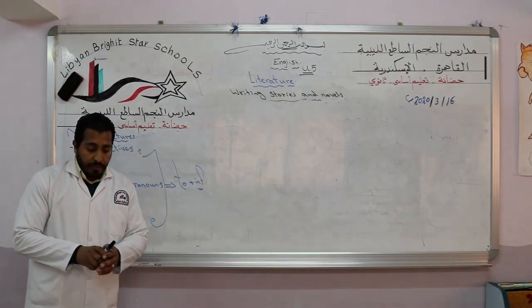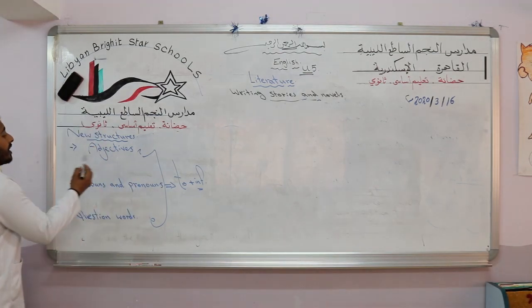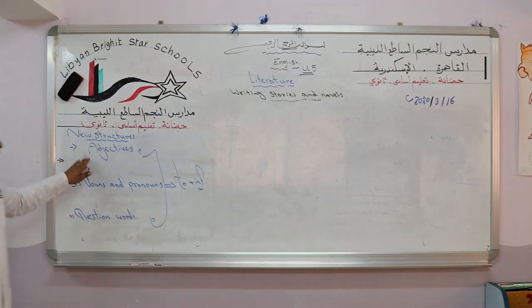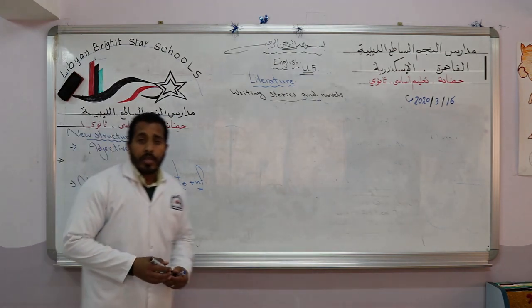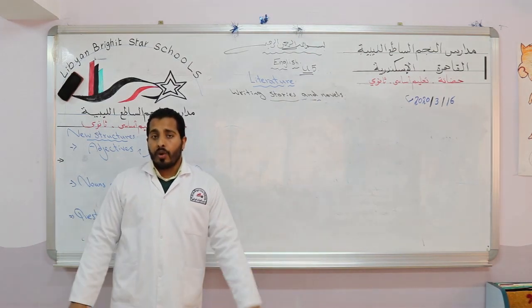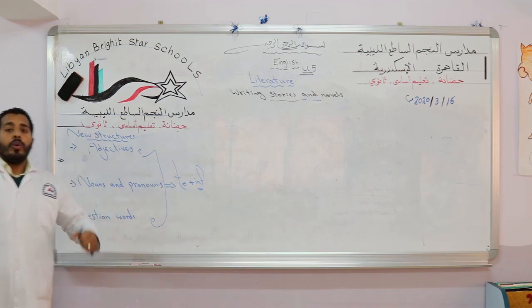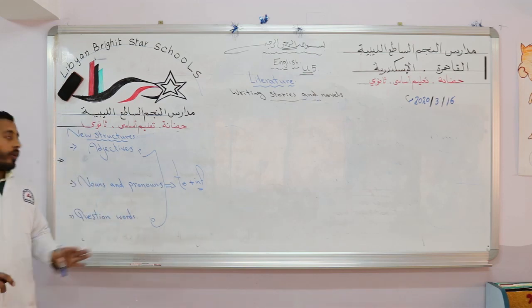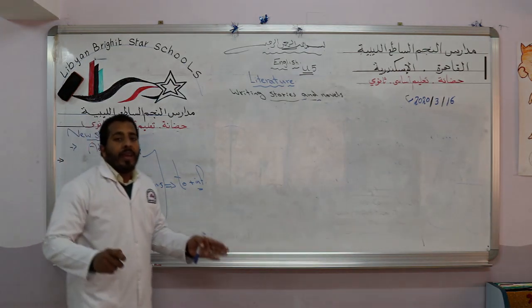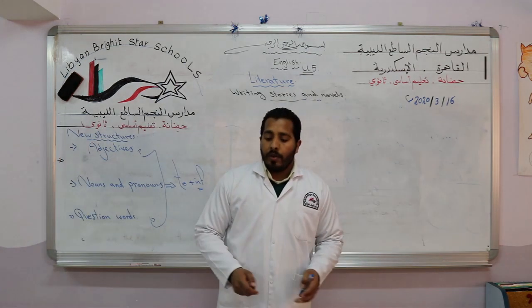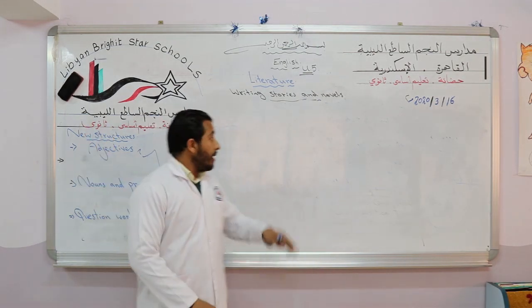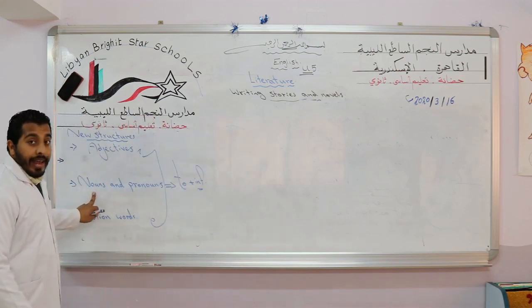What does the word adjectives mean? Adjectives are words which describe nouns. For example: tall, strong, beautiful, careful, and so on. Nouns are what we use to name anything — any place, any person. For example: pen, door, ball — these words are nouns.